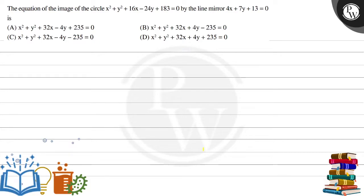Hello, let us read this question. The equation of the image of this circle, x squared plus y squared plus 16x minus 24y plus 183 equals 0, by the line mirror 4x plus 7y plus 13 equal to 0 is which of the following given option.